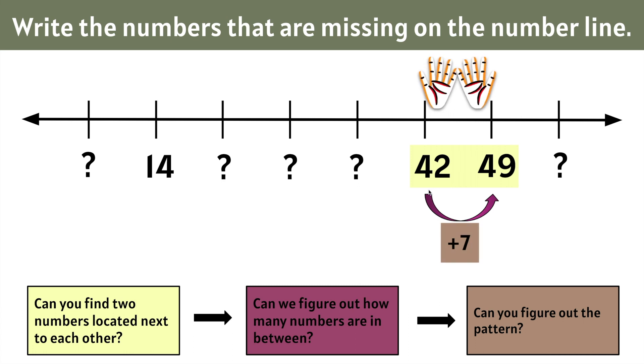We notice that the pattern for this number line is add 7, which means that now we can figure out this number by simply adding 7 to 49. Let's add 7 to 49. 49 on our heads: 50, 51, 52, 53, 54, 55, 56. 49 plus 7 is 56.